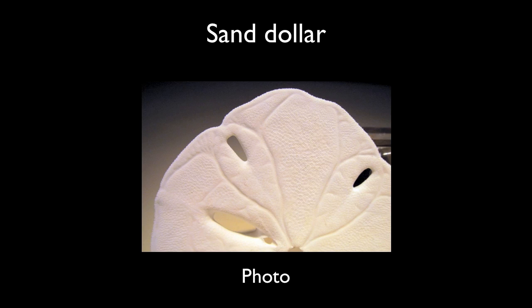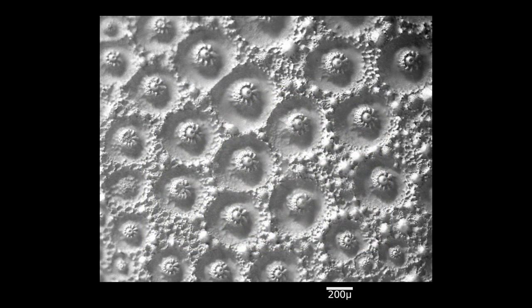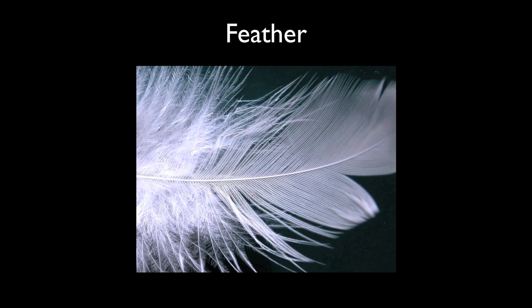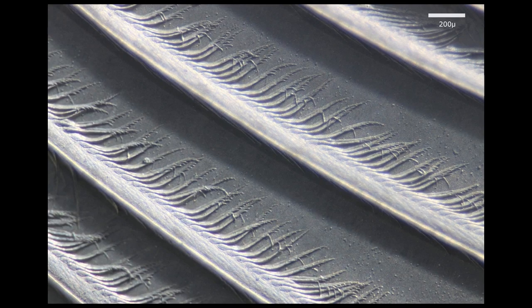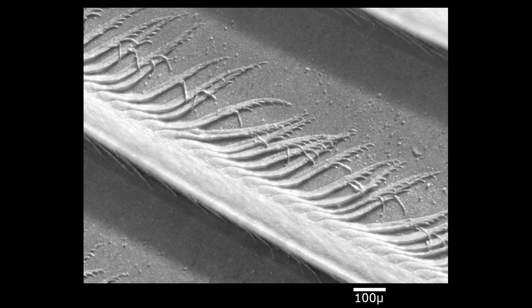The surface of a sand dollar is particularly fascinating. When GelSight is pressed against a chicken feather, we can see the barbs, barbules, and even the barbule hooks. These structures are smaller than the width of a human hair.